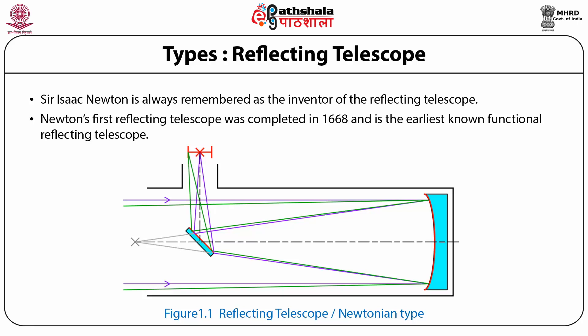Here we see in the given figure a reflecting telescope, which we also call the Newtonian one. We have incident light coming from a source and falling on the mirror. After reflection, it gets reflected back towards the target. In reflecting telescopes, the primary mirror reflects the light back to a focus. The primary mirror has a concave, spherical or parabolic shape and as it reflects the light, it inverts the image at the focal plane.